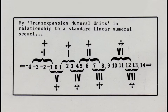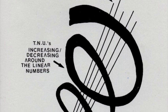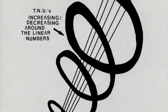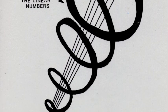The trans-expansion numeral unit is the distance between linear counting locations that don't neighbor each other. When arranged in order, the TNUs form a spiral around the standard linear numbers.